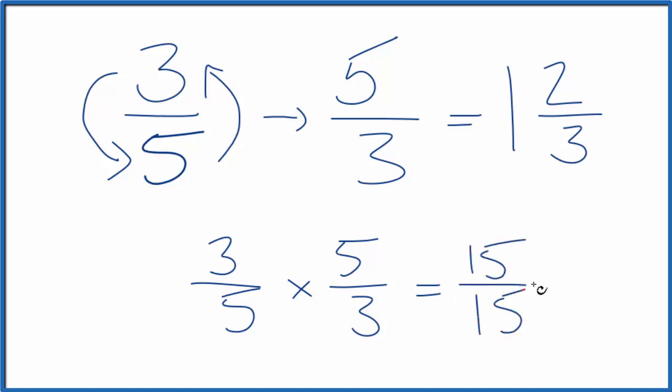5 times 3, that's 15. And 15 divided by 15, that equals 1. So we did the first part correctly.